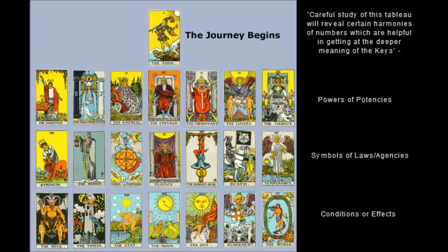When you lay the 22 major arcanas out in rows, the first row represents the powers and potencies, the middle row represents symbols of laws and agencies, and the bottom row represents credentials and effects. For example, the magician's power can help balance strength to overcome the devil, and the high priestess — like a hermit understanding herself — can awaken and ultimately destroy the ego. There's clearly deeper meaning at work.